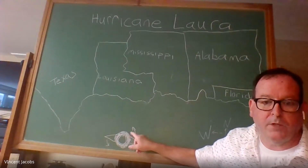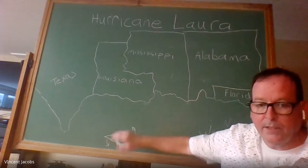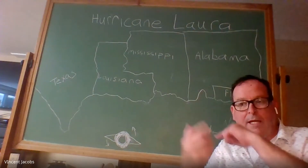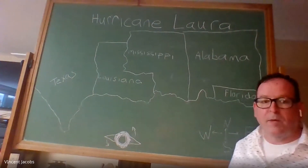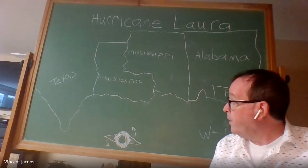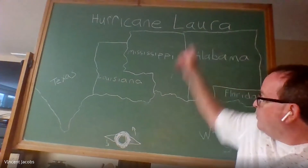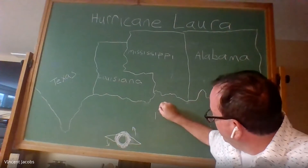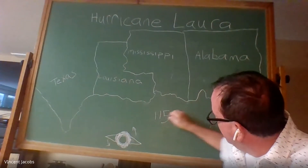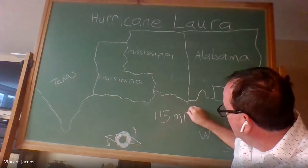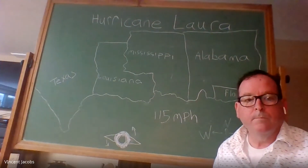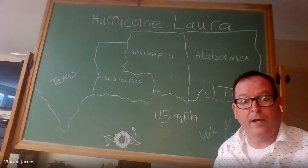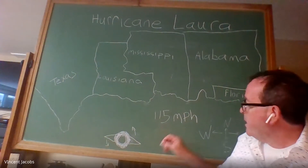You'll see in the papers or on the internet or the news they'll draw a symbol like this and have arrows to indicate that the storm is spinning, because that's what hurricanes do — and we'll learn all about that as we go through this. So this is today, Wednesday, Hurricane Laura, and the winds are 115 miles per hour. That's fast — a lot of wind.